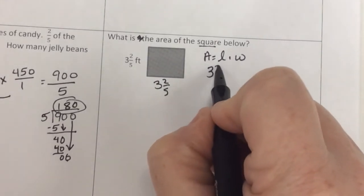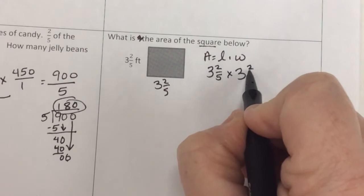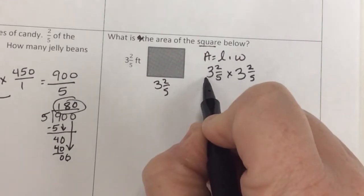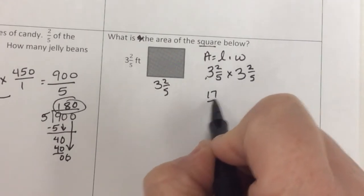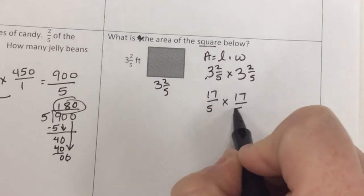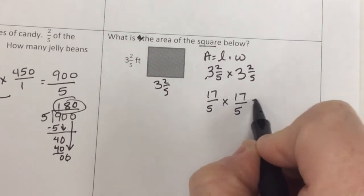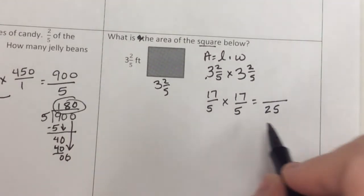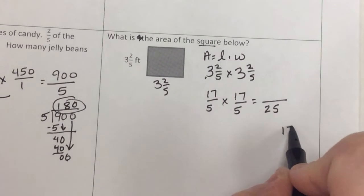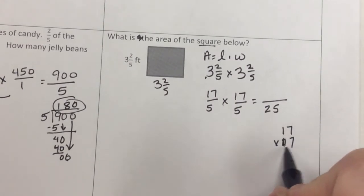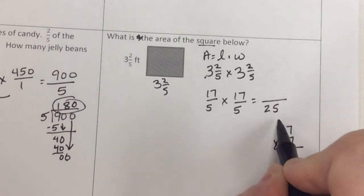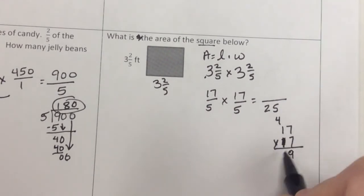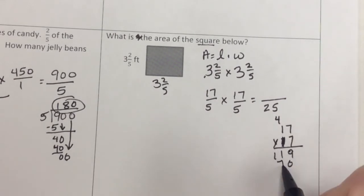So 3 and 2/5 times 3 and 2/5. 5 times 3 is 15. 16, 17/5 times 17/5. Well, I know that 5 times 5 is 25, but I do not know 17 times 17. So I'm going to have to write it down. 1, 7. 7 times 7 is 49. Carry my 4. 7, 8, 9, 10, 11. Then I'm going to do 1 times 7 and times 1.